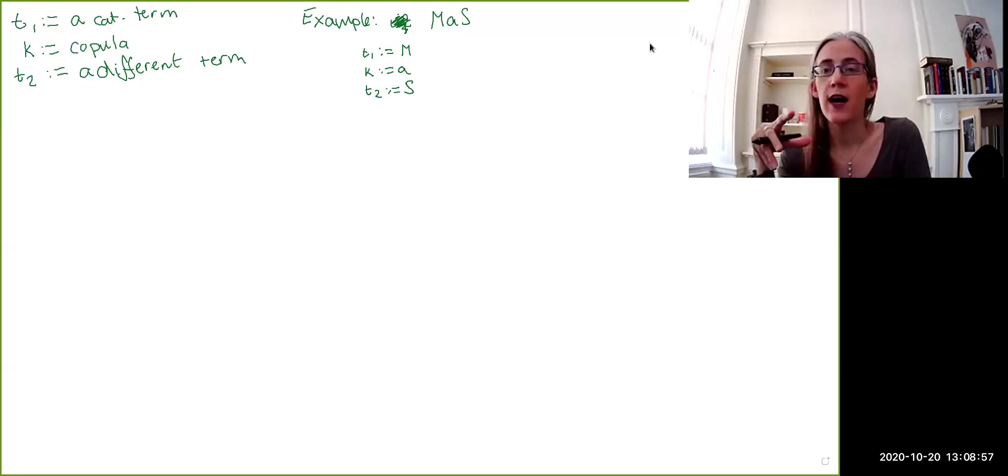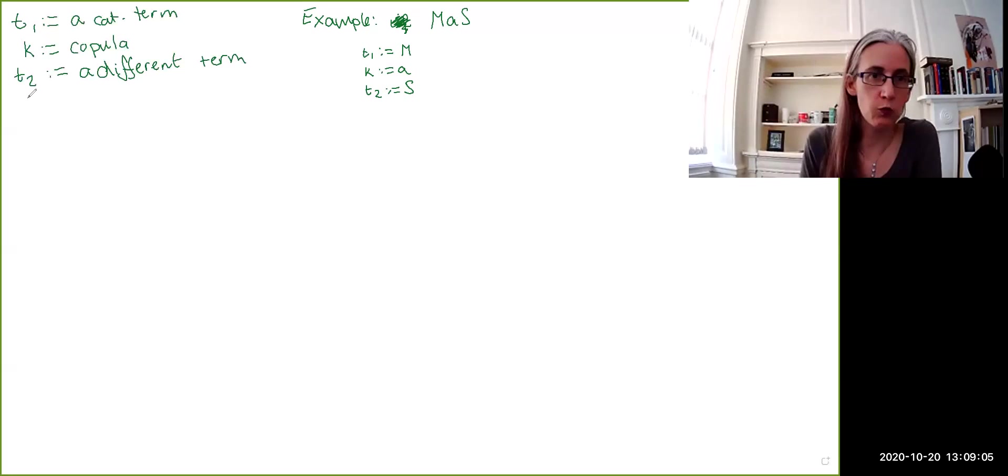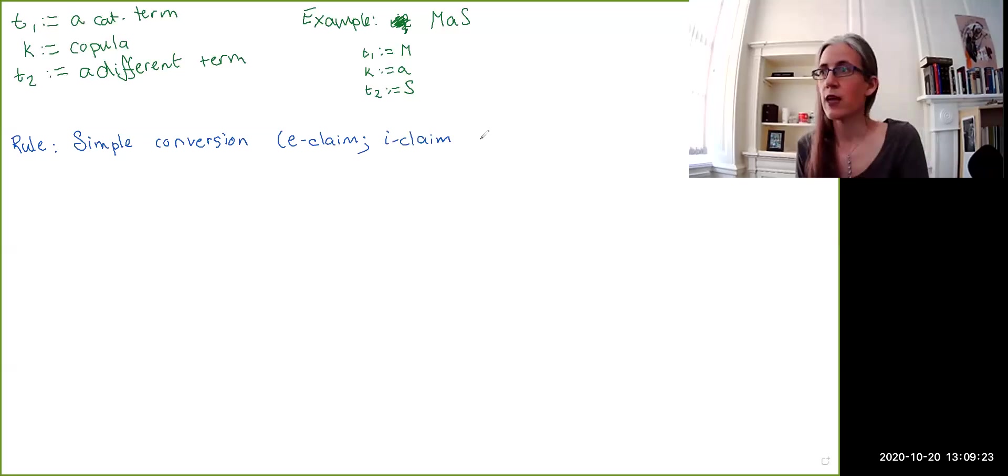So we have two transformation rules, and each transformation rule is going to come in two versions. The first one is the rule of simple conversion. There will be an e-claim version and an i-claim version. So, basically, with simple conversion, if we have written down in our proof at some line an e-claim, what we can do with simple conversion is we can take the two terms and swap their order. So the predicate becomes the subject, and the subject becomes the predicate. We can also do the same thing if we have an i-claim. So simple conversion takes the two terms and swaps their order.